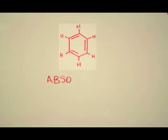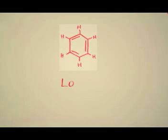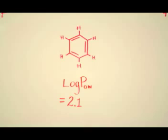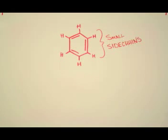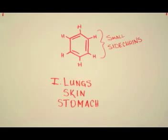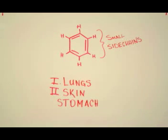The absorption of benzene is facilitated by its physiochemical properties, including a hydrophobic log POW of 2.13 and its small side chains. These properties allow for simple diffusion of benzene across cell membranes from multiple forms of contact: respiratory in the alveoli of the lungs, dermal through the skin, and digestive in the stomach after ingestion.